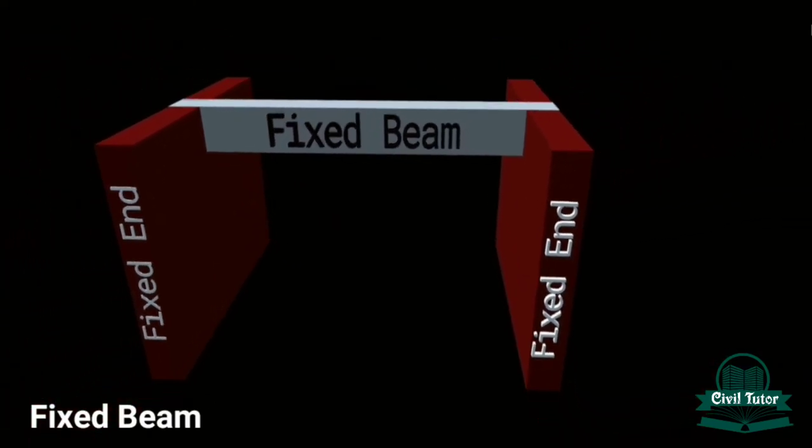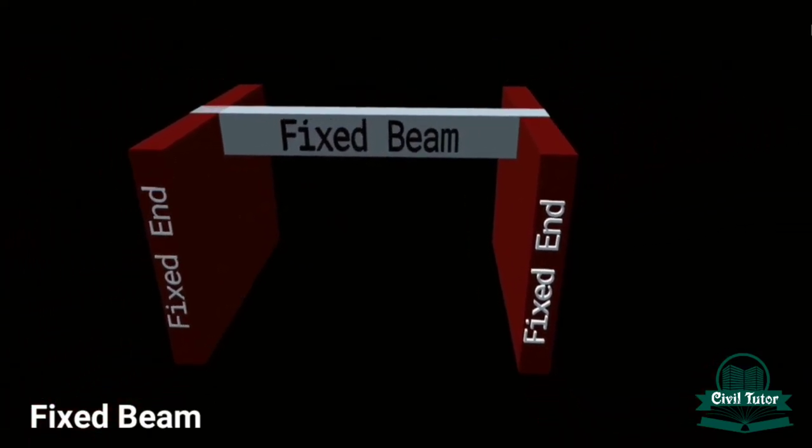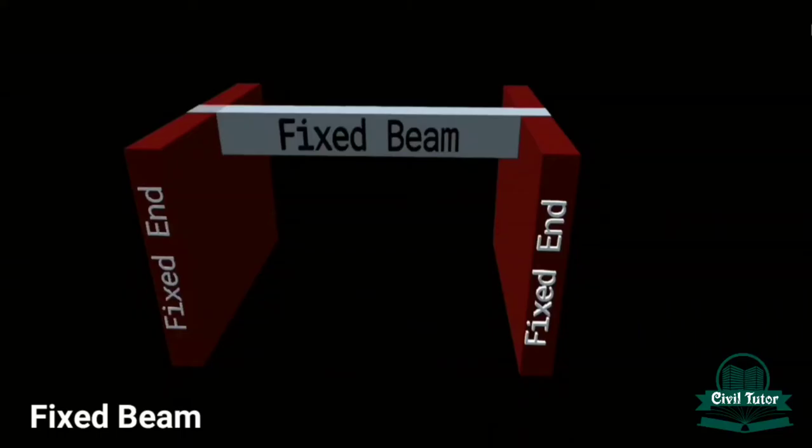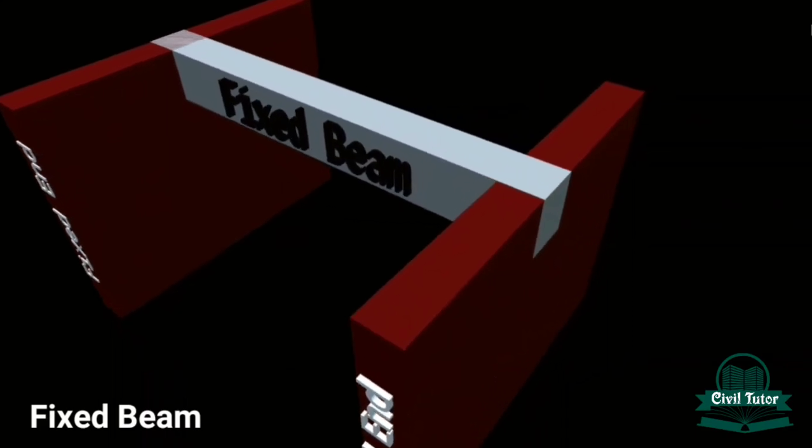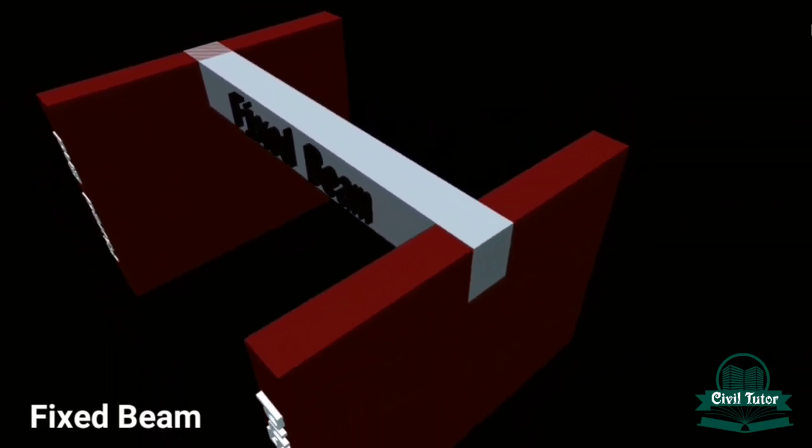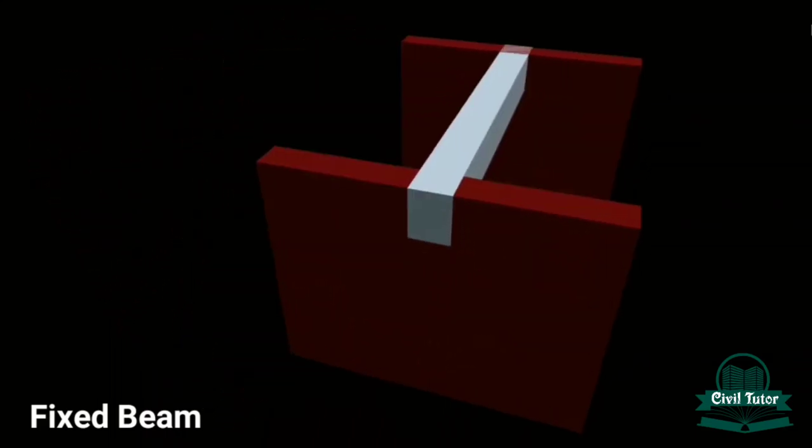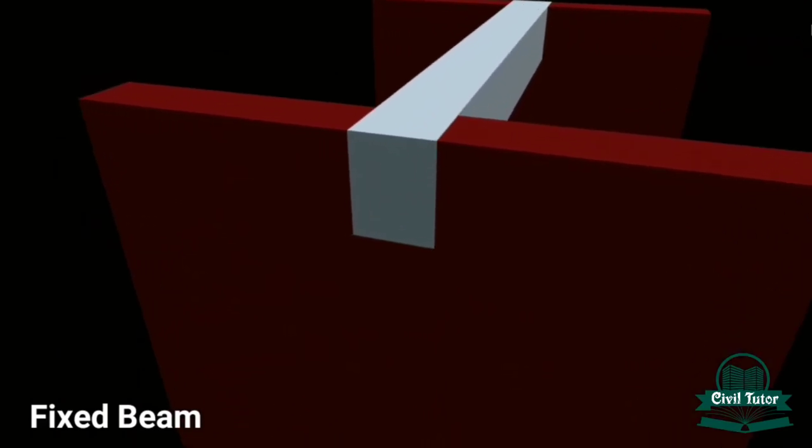The first one is fixed beam. It's a type of beam which is fixed at both the supports, or simply we can say it has two fixed ends. As you can see in this animation, both the ends of the beam are fixed in walls.